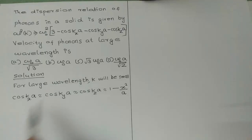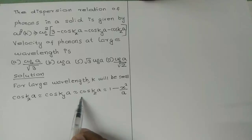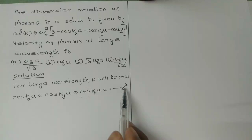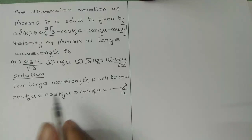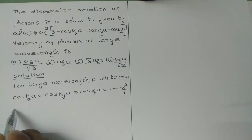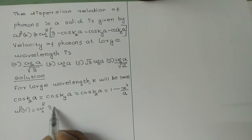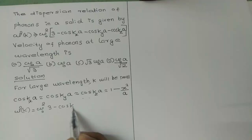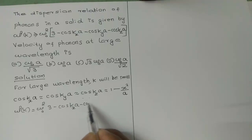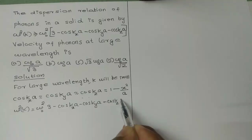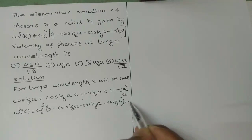So we can write: cos(KxA) approximately equal to cos(KyA) approximately equal to cos(KzA), approximately equal to 1 minus (KA)² divided by 2. This is the small-K approximation applied to each cosine term in the dispersion relation.